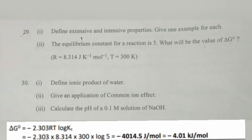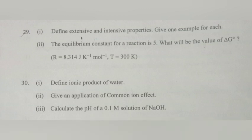The answer is minus 4.01 kilojoules per mole. Question 30.1: Define ionic product of water.